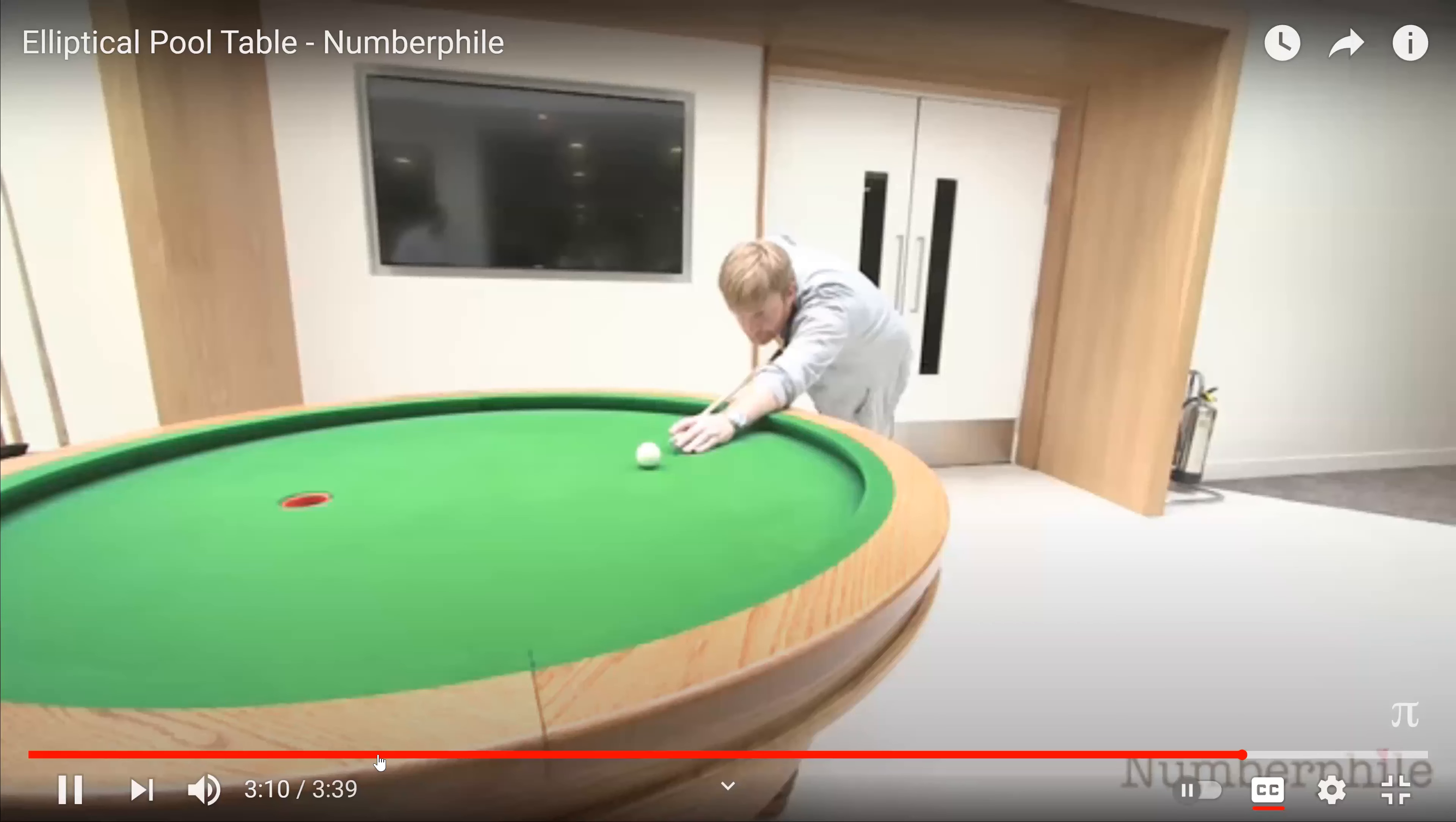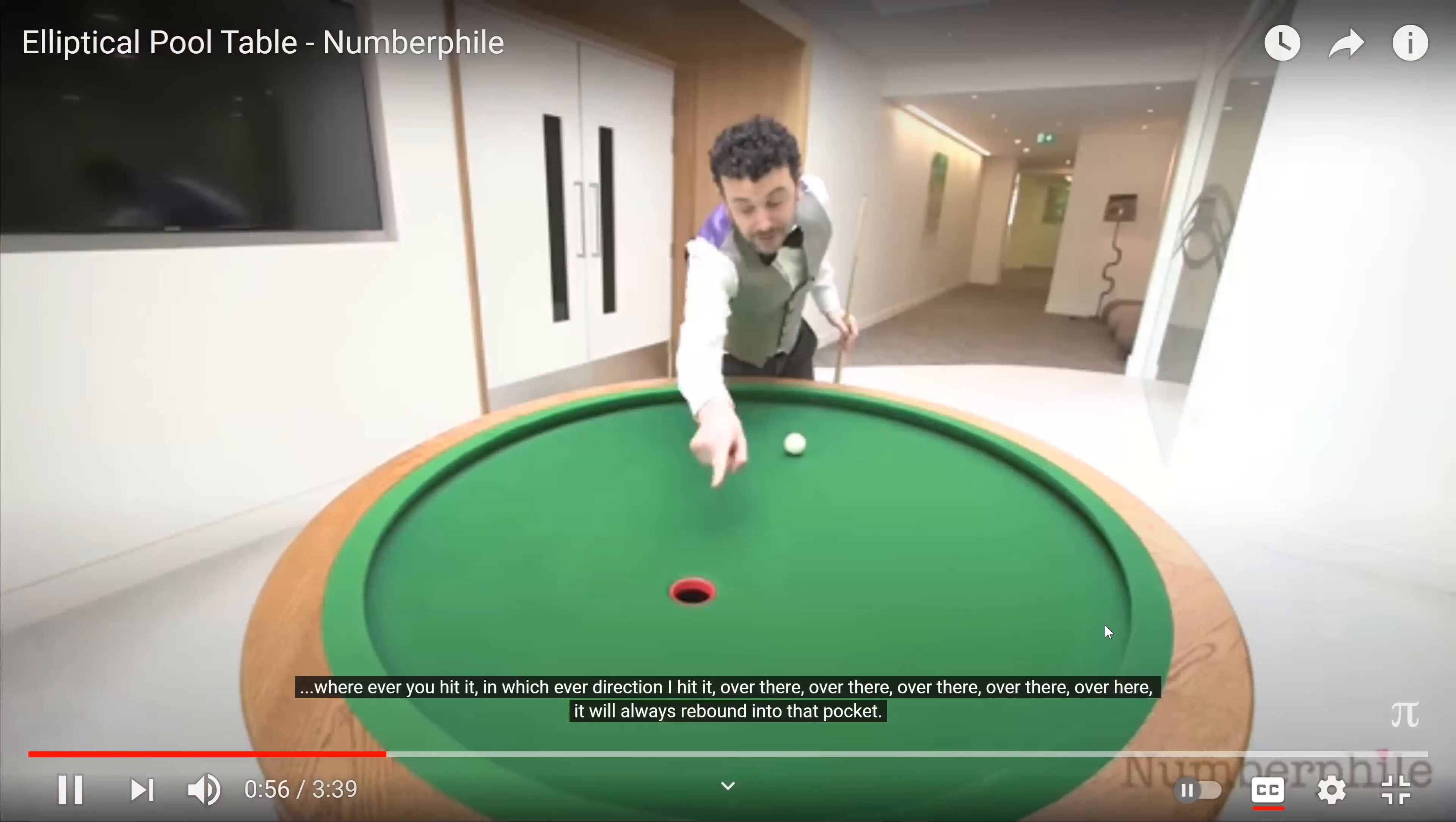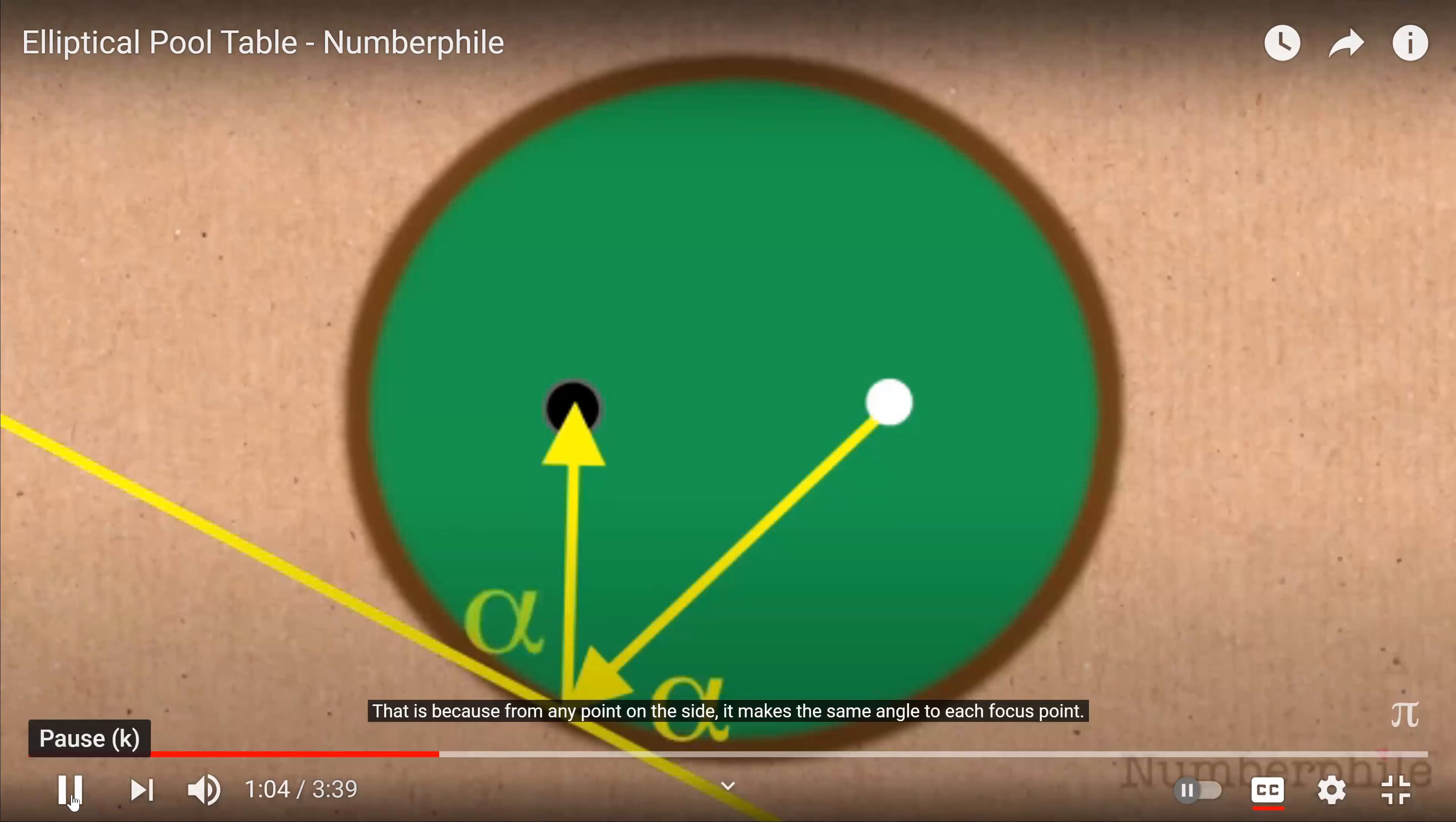Over there, over here, it will always rebound into that pocket. That is because from any point on the side, it makes the same angle to each focus point. And as you know, when you rebound something against a surface, the angle of incidence equals the angle of reflection.